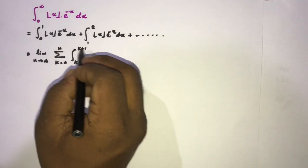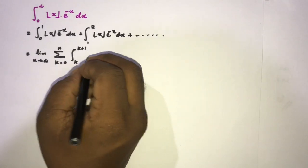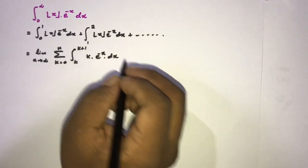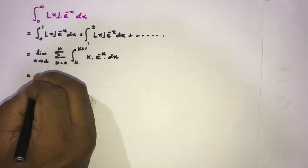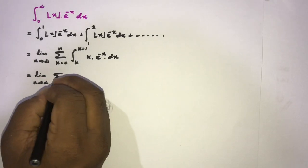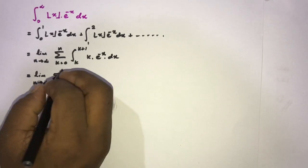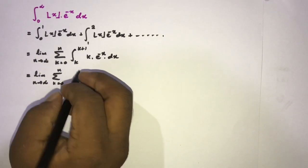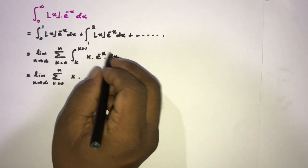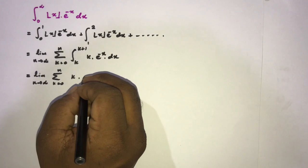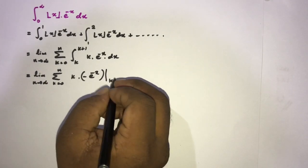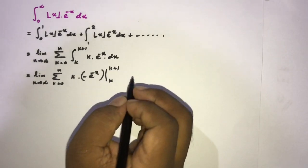On the interval [k, k+1], floor(x) equals k, so the integrand becomes k times e to the minus x. Integrating, we get k times the antiderivative of e to the minus x, which is negative e to the minus x, evaluated from k to k plus 1.